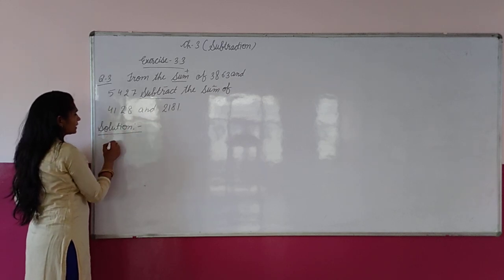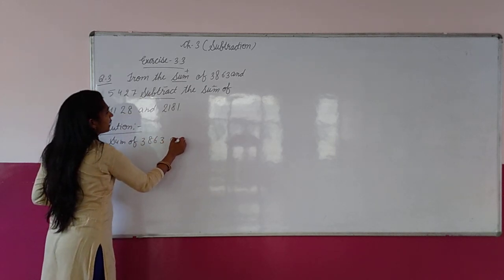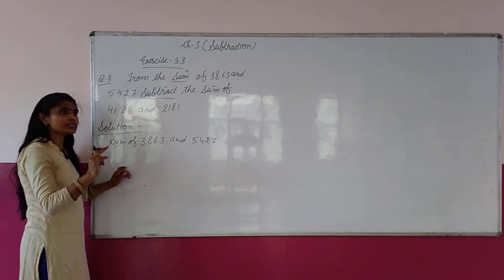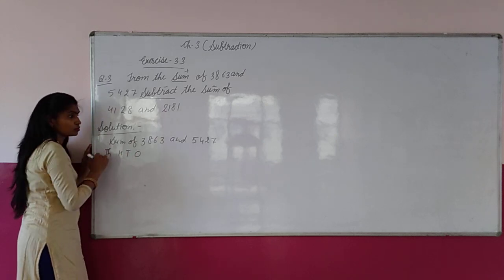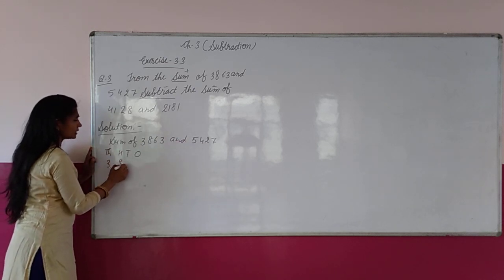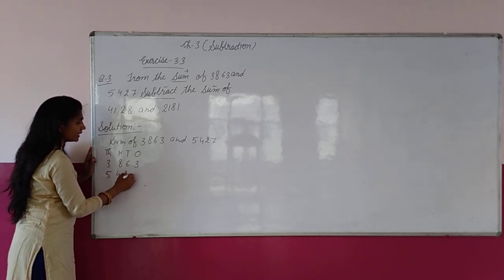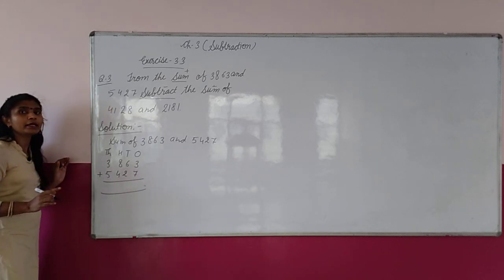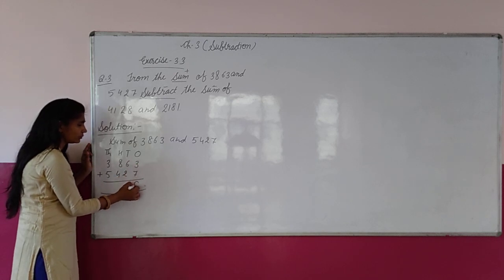पहले हम करते हैं sum of 3,863 and 5,427. पहले हम इन दोनों का sum निकालते हैं. 1, 10, 100, 1000 columns में: 3,863 plus 5,427. 3 plus 7 — 3 में 7 जोड़ करो, will come 10.